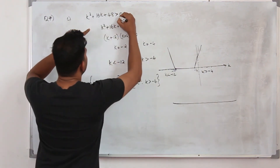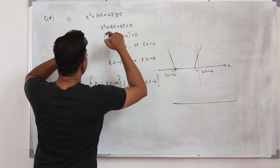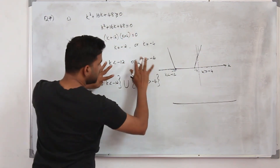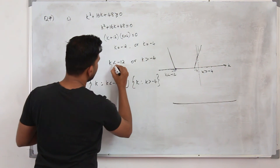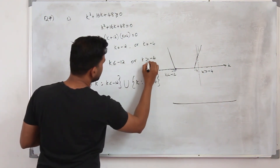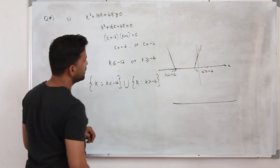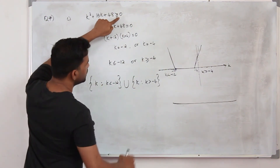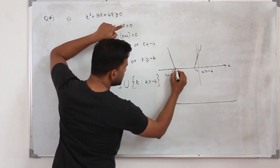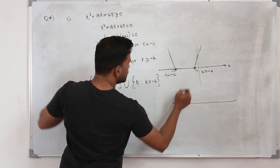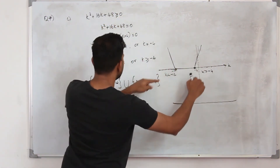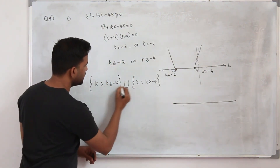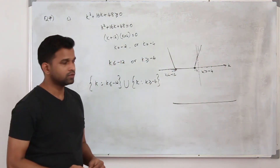If the inequality were greater than or equal to 0, the method is the same — just include the endpoints, because the function equals 0 at k = minus 12 and k = minus 4. So the solution would become k ≤ minus 12 or k ≥ minus 4.